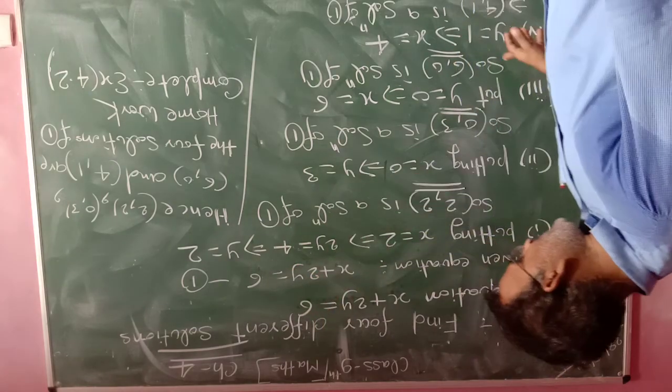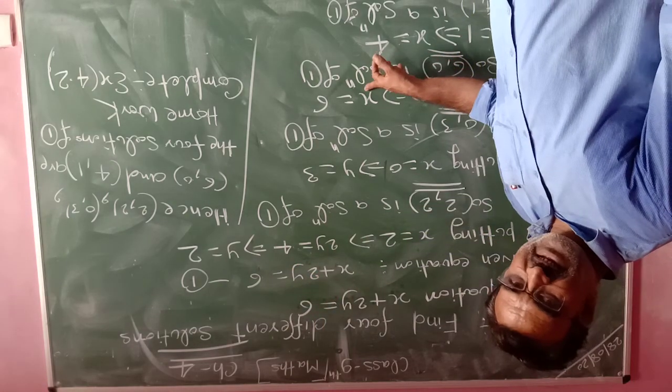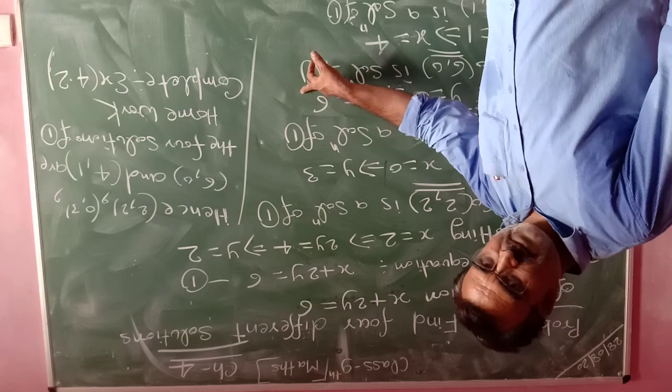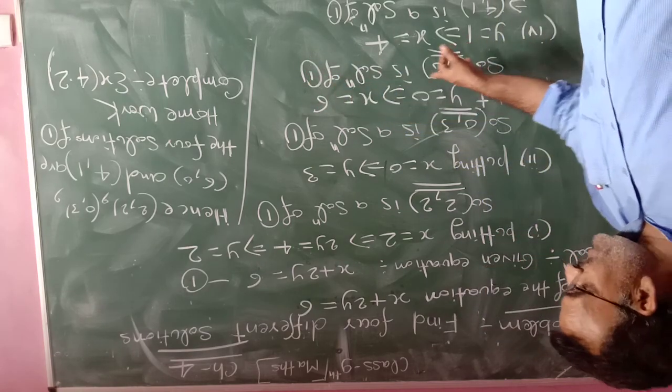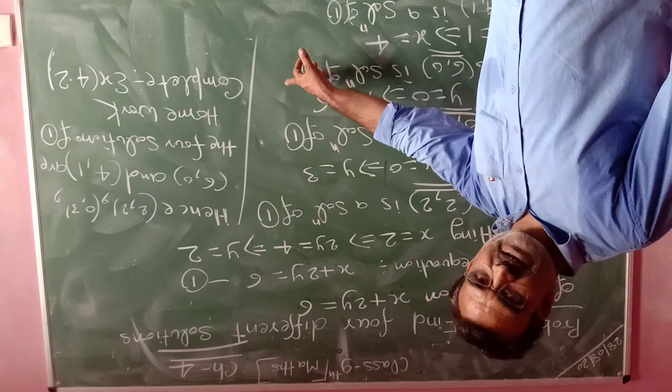For the third solution, putting y equal to 0, we have x equal to 6. Therefore, 6 comma 0 is another solution of the given equation.